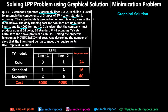The company must produce at least 24 color TVs, 16 standard TVs, and 48 economy TV sets. We have to formulate the above problem as an LPP with the objective function as minimization. We want to minimize the cost and determine the number of days each line should be running to meet the requirements. The question is all about minimizing the cost.